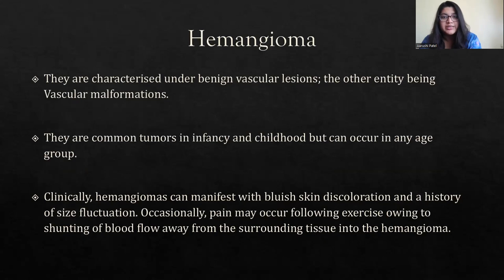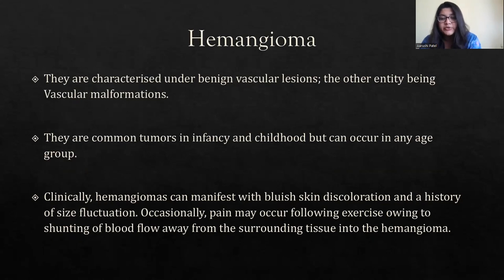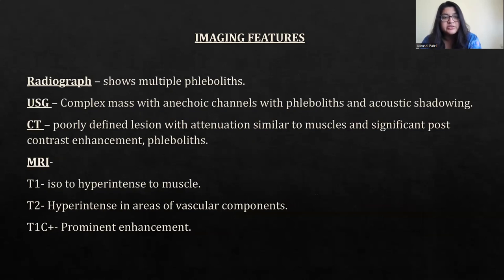The first soft tissue lesion to be discussed is hemangioma, characterized under benign vascular lesions, the other entity being vascular malformations. They are common tumors in infancy and childhood but can occur in any age group. Clinically, hemangiomas can manifest with bluish skin discoloration and a history of size fluctuation. Pain may occur following exercise, owing to shunting of blood flow into the hemangioma. On plain radiograph, hemangioma usually shows multiple phleboliths. On ultrasound, a complex mass with anechoic channels, phleboliths, and acoustic shadowing is seen. On CT, a poorly defined lesion with attenuation similar to muscle and significant post-contrast enhancement is noted, and phleboliths are seen.